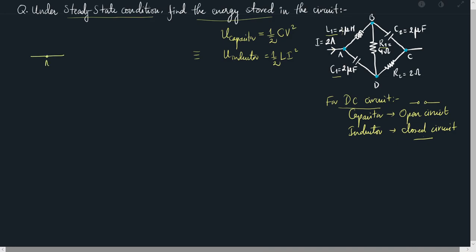In the equivalent circuit, since the inductor is closed, draw a straight line from node A to node B. From B there is resistance R1 equal to 4 ohms leading to node D, and then resistance R2 equal to 2 ohms leading to node C. From A to D there is a capacitor, but since it acts as an open circuit we don't connect those points. Similarly, between B and C there is another capacitor that is also not connected.